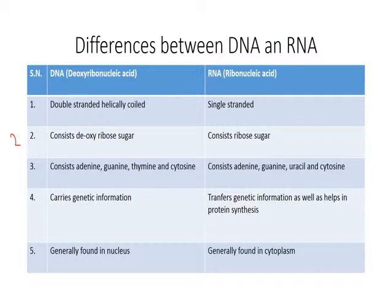DNA carries genetic information — it is like a big information center. RNA carries that information out. In the case of mRNA, it carries genetic information out to the cytoplasm. DNA is present in all cells, and RNA also carries protein synthesis information.